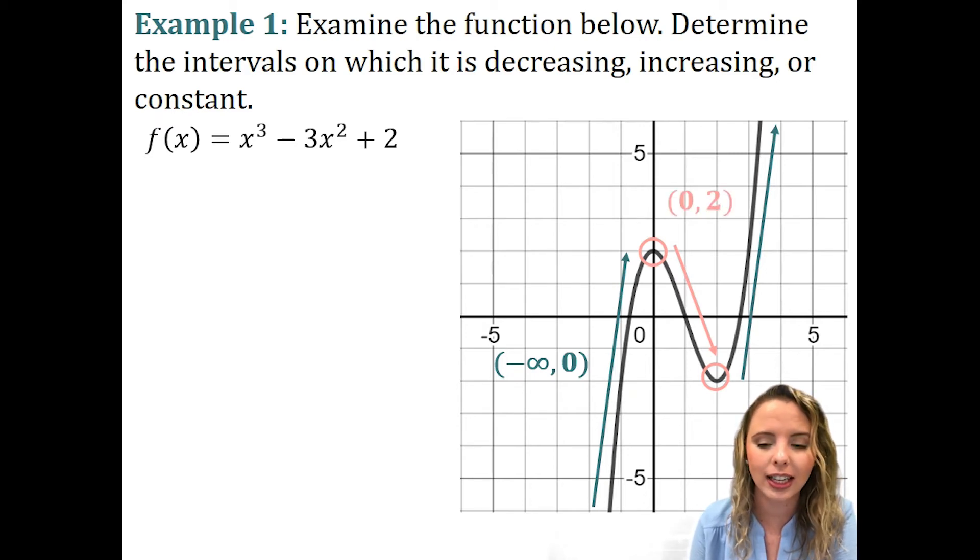And then, our next, our decreasing interval, our interval going down is going to be zero to two. Our max is at zero. Our minimum was at two. Zero to two. And then, lastly, our last interval began at two and it ended at infinity.